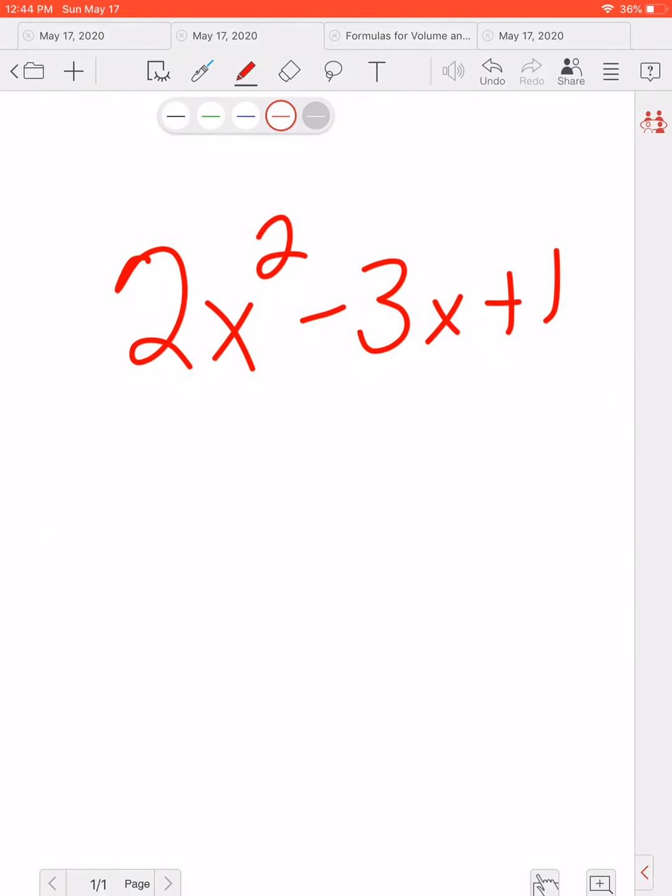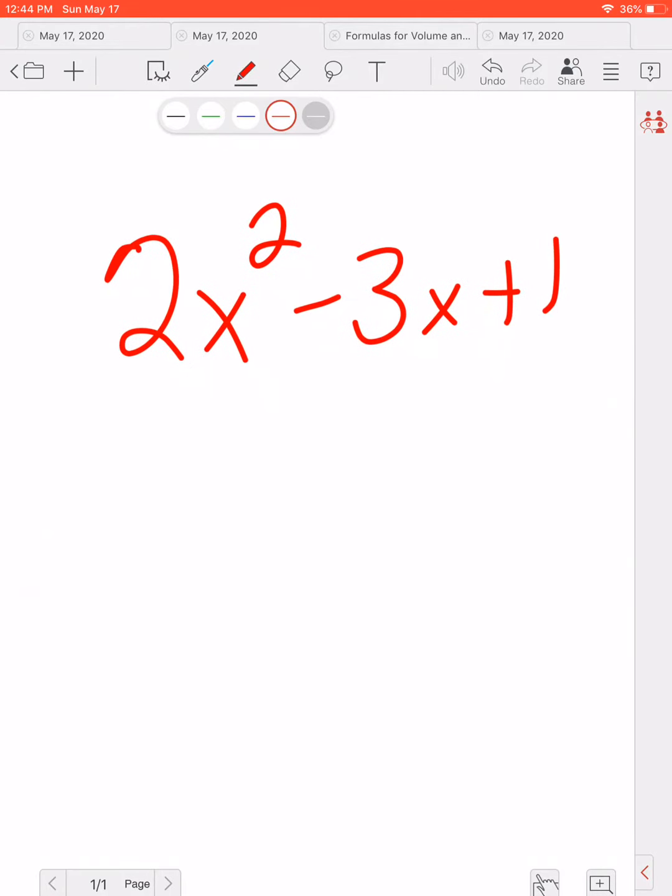Now, if we have a number in front, we can play the guess and check game, but I taught you guys the multiply back method. So we're going to multiply that 2 back. So we're going to have X squared minus 3X plus 2.